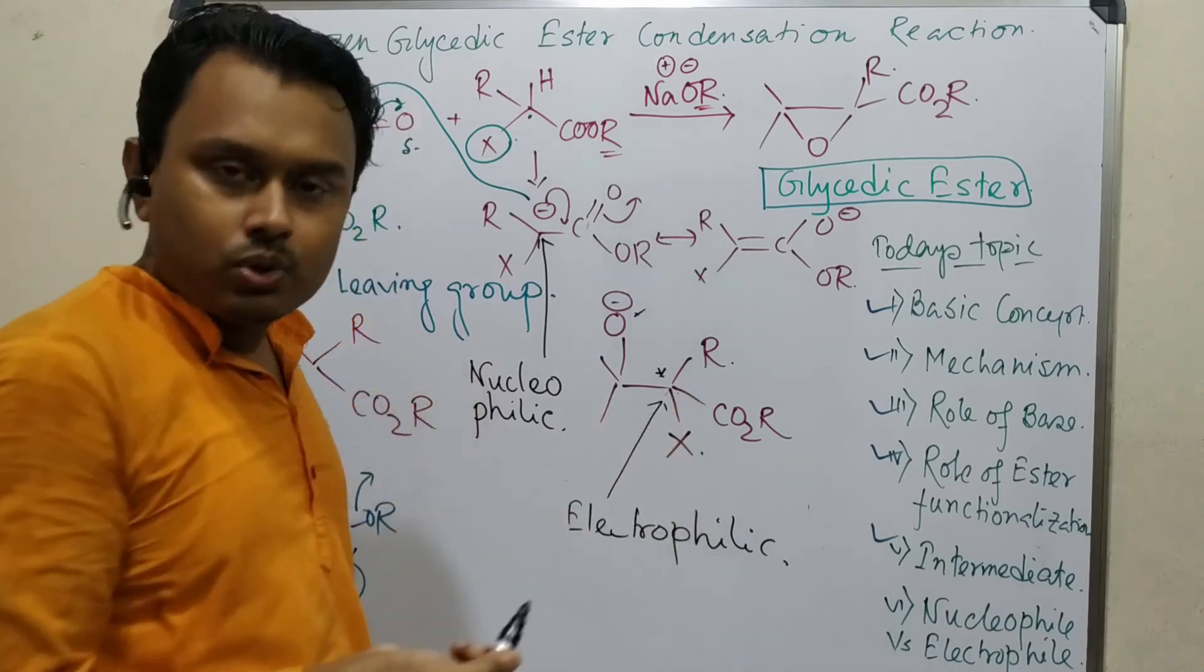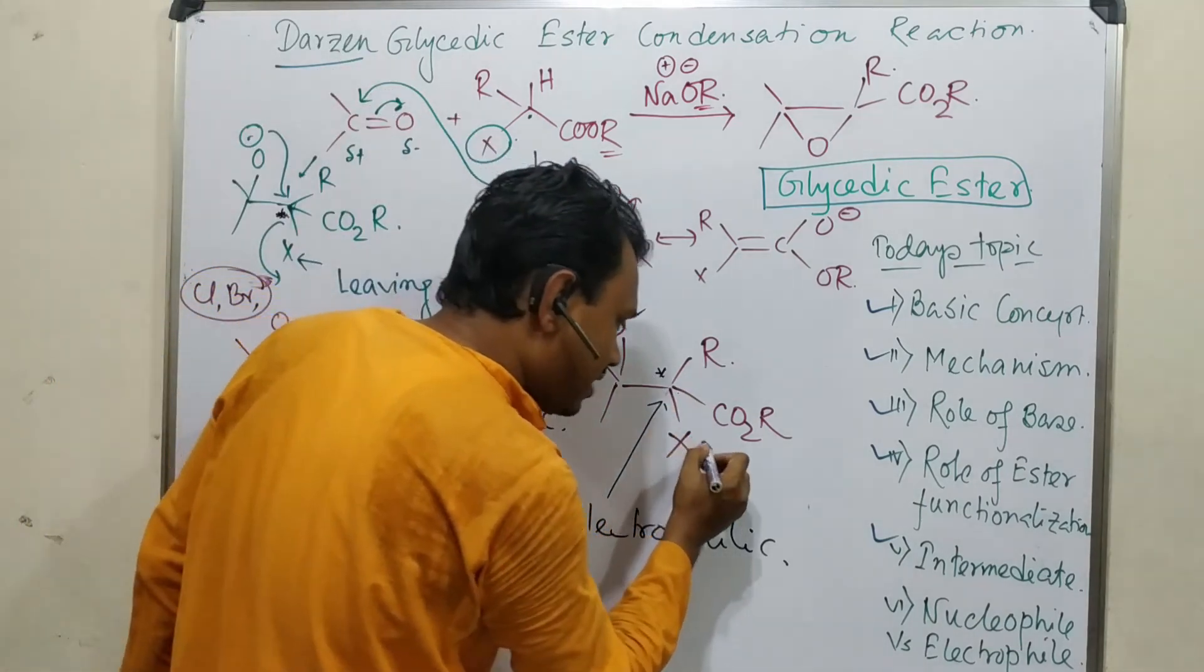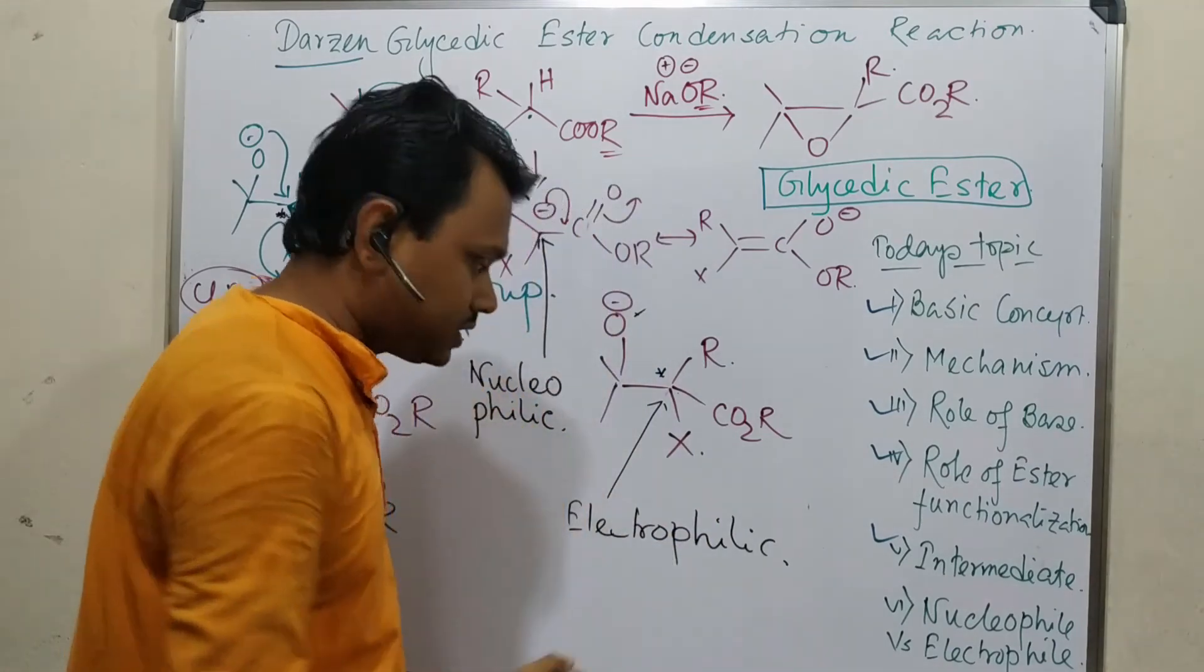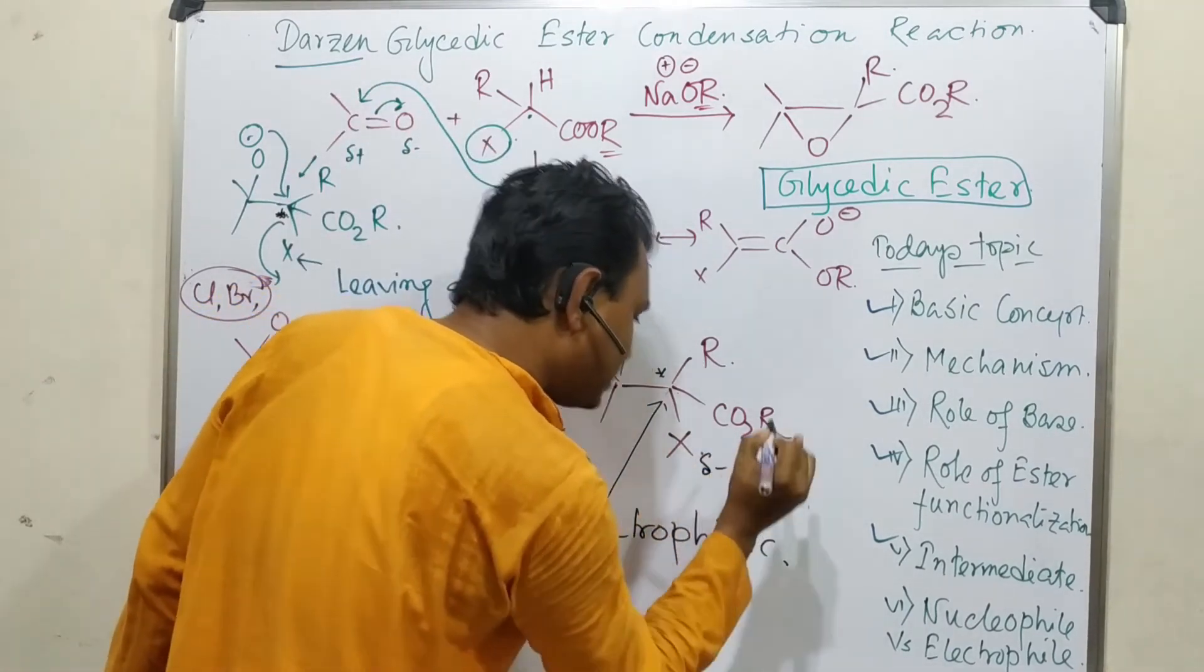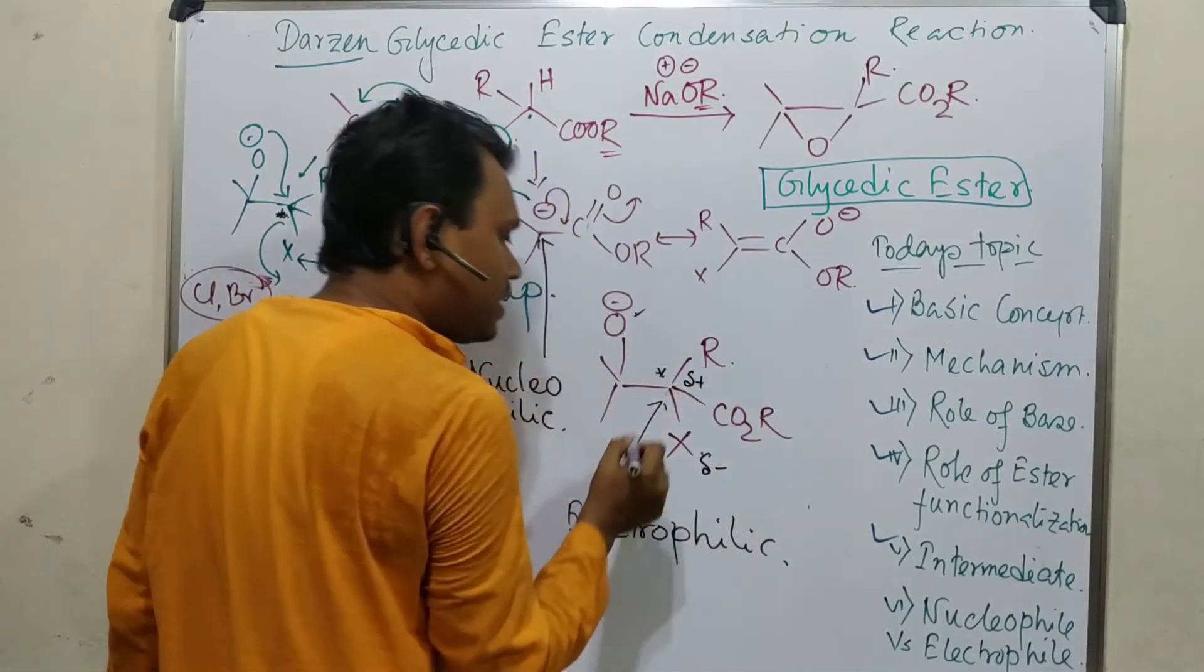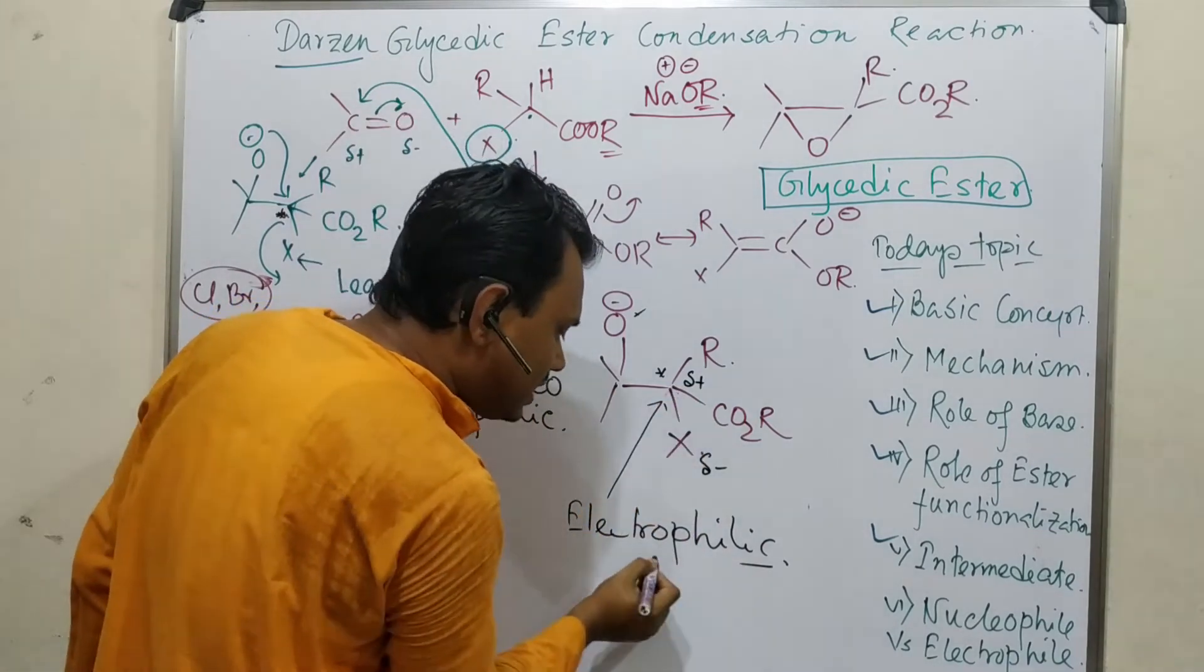That's why you can consider this is delta negative, this is delta positive. That is the reason we can consider it's an electrophilic carbon. And another thing, the next step also reflects this because this epoxide attacks here - this is a nucleophilic center, this is electrophilic center. That's why this reaction is happening.